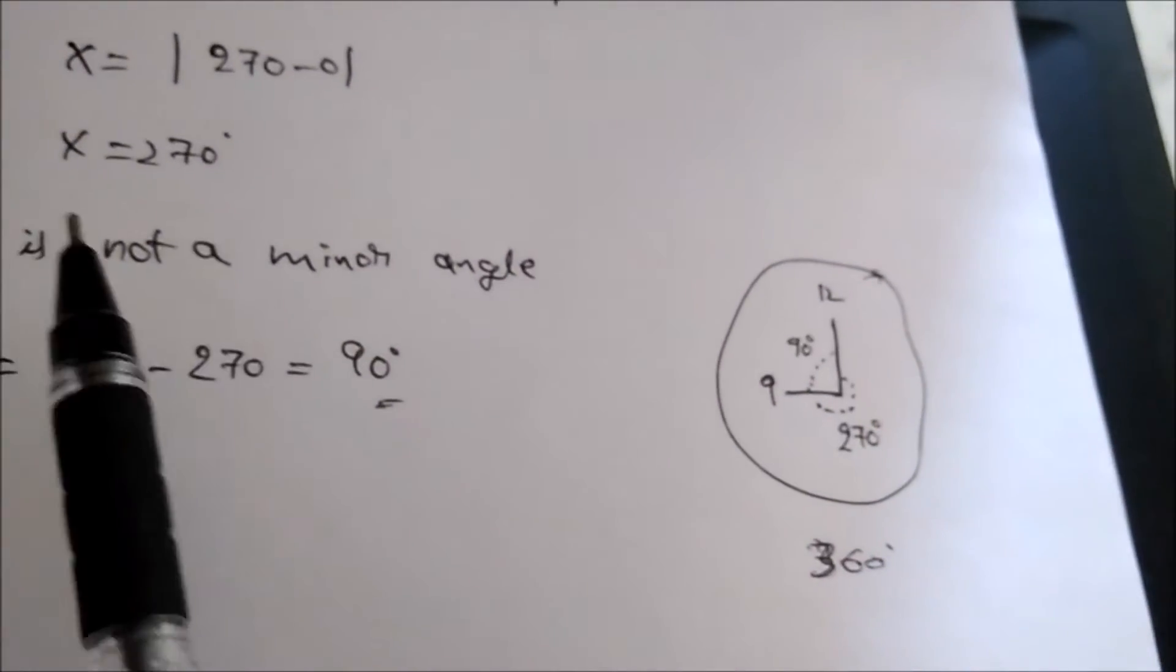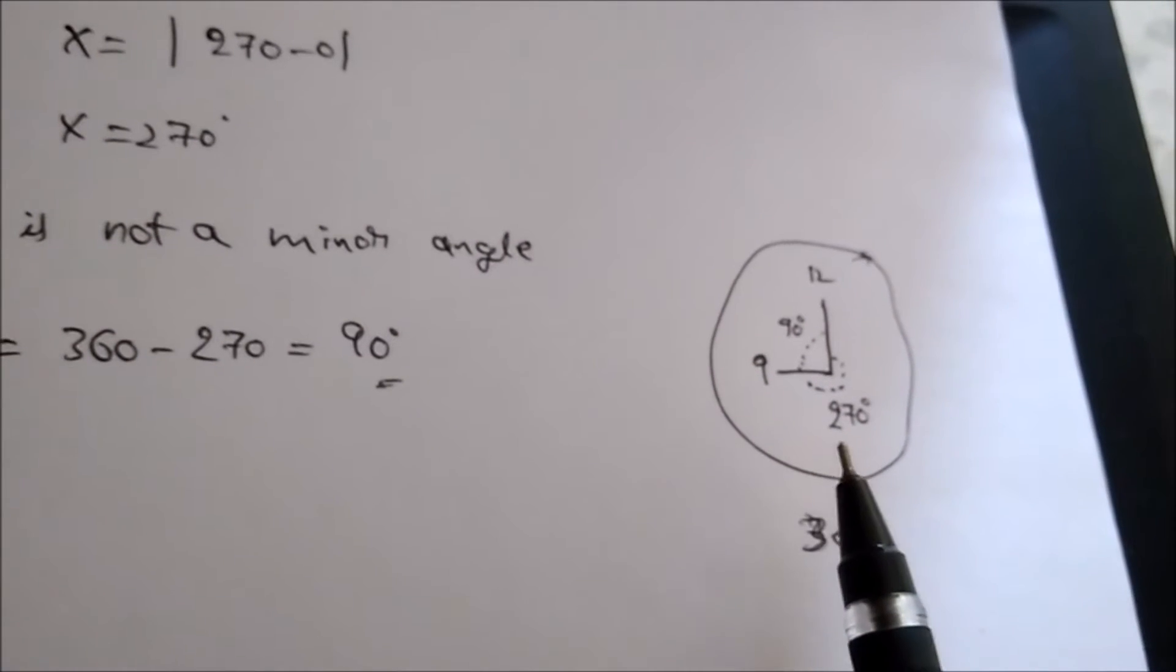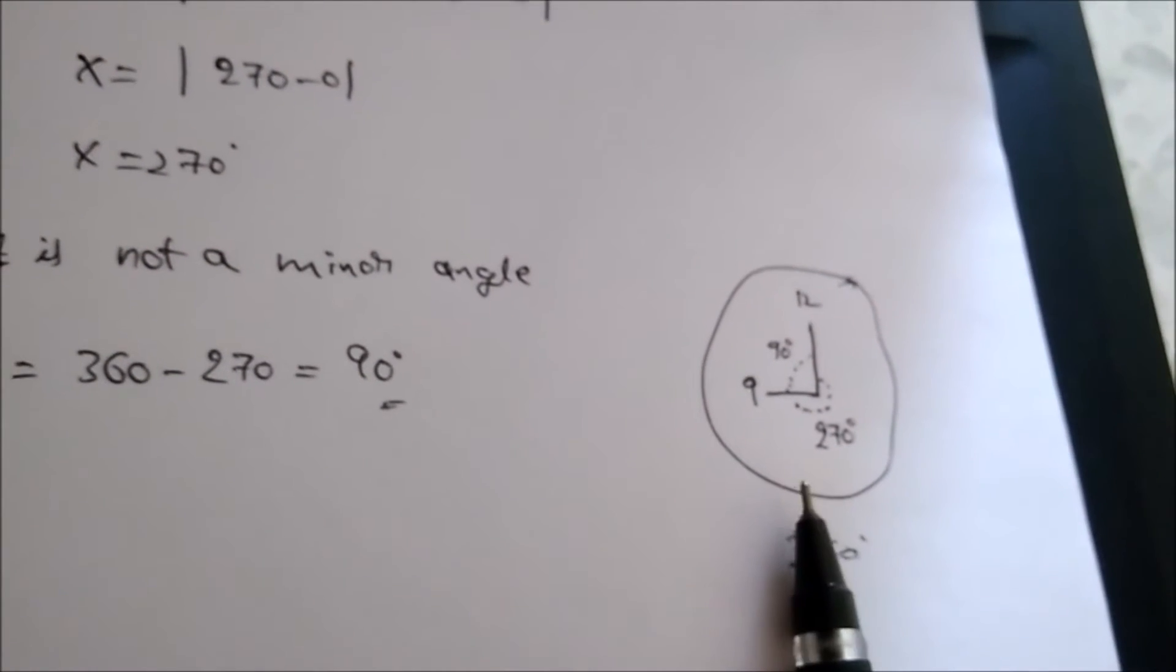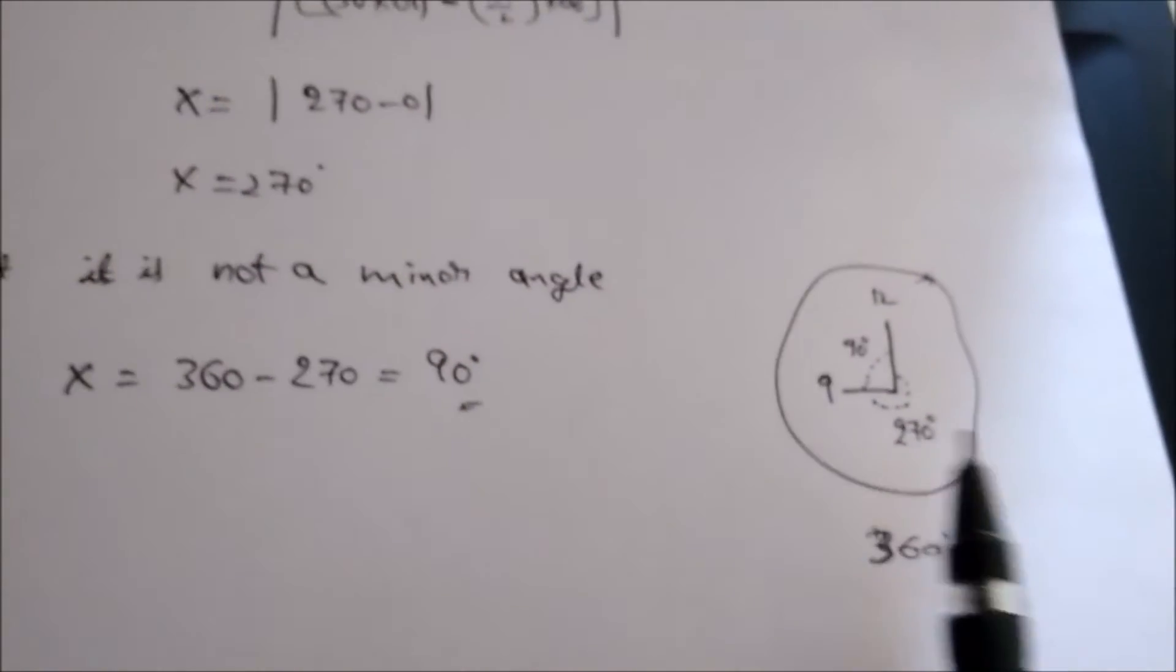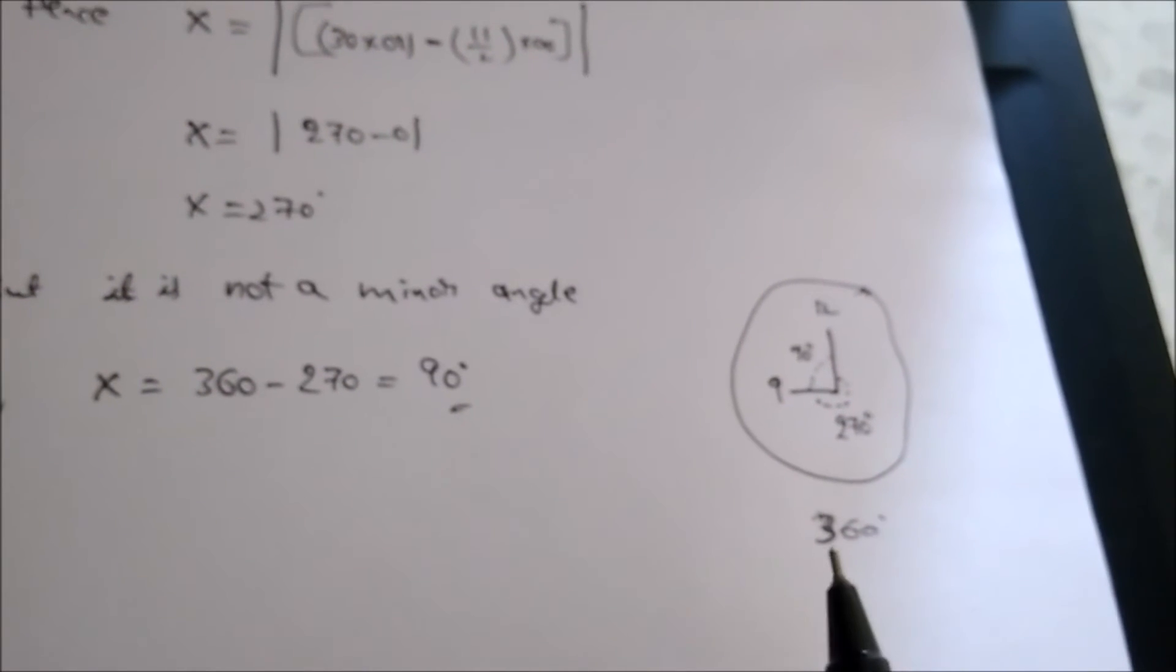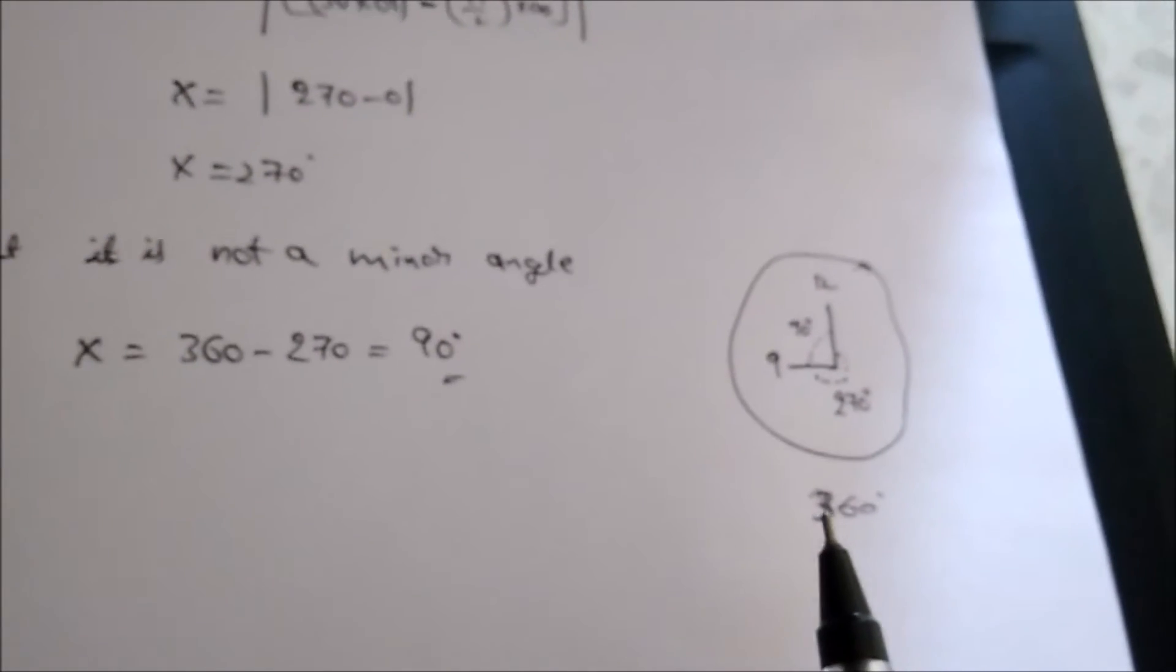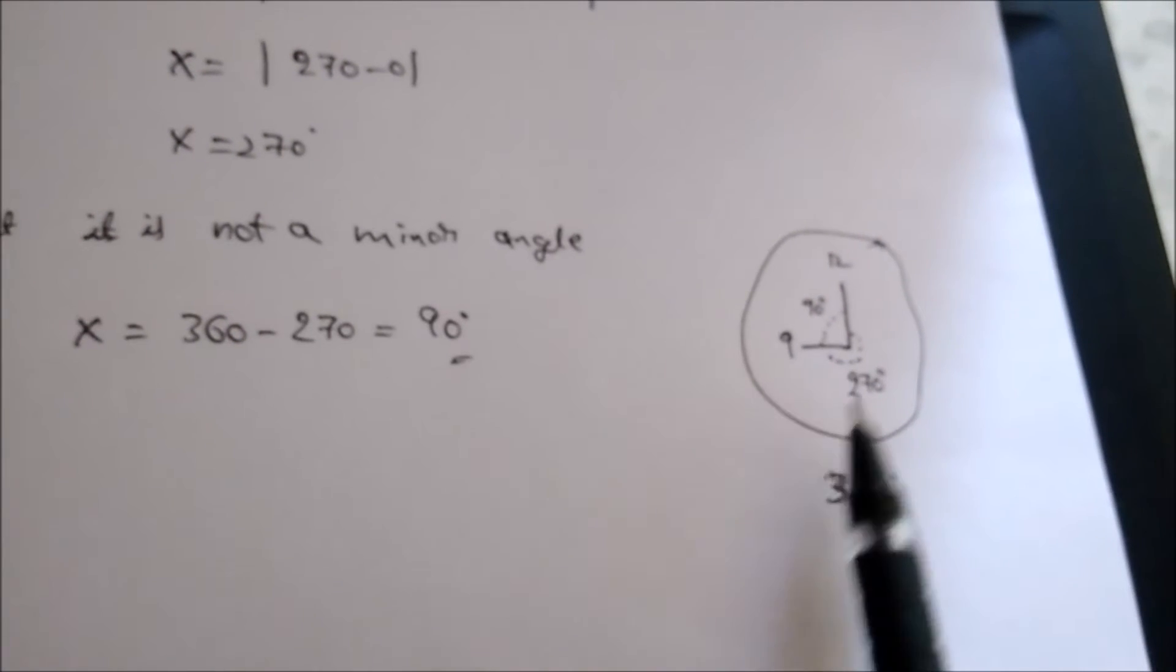270 degrees means it will be like this, 270 degrees. See, 270 degrees will be a major angle. We know the overall degrees, that means the total angle in a clock is 360 degrees.